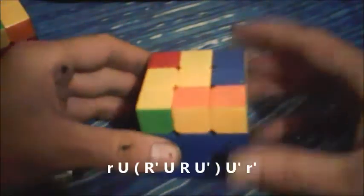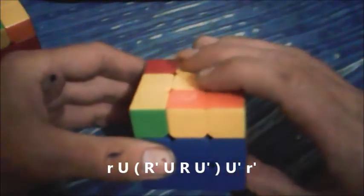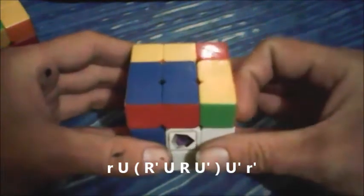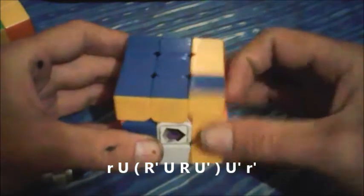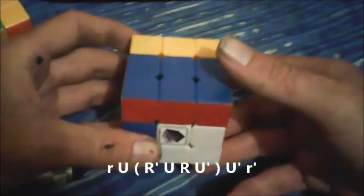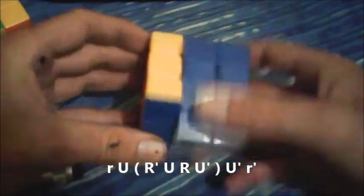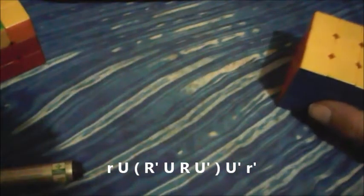So we'll go through this one first: R prime U, R prime, U, R U prime, and U prime, R prime. You notice I included the U prime U prime there merely just to help you remember that trigger in the middle.